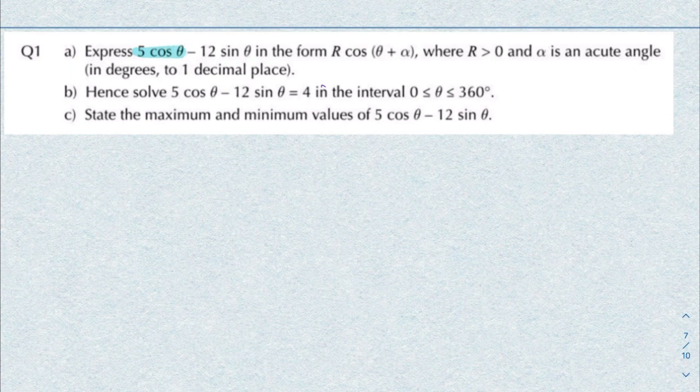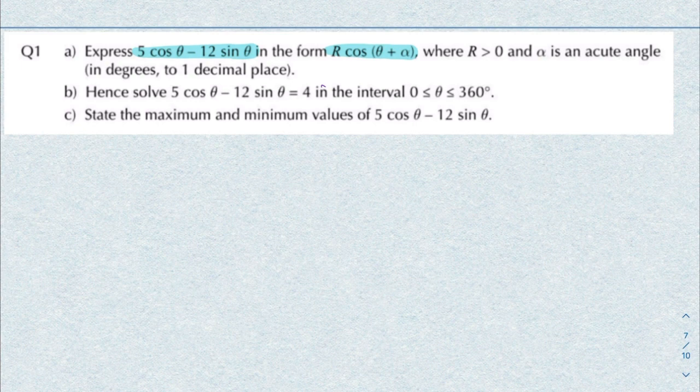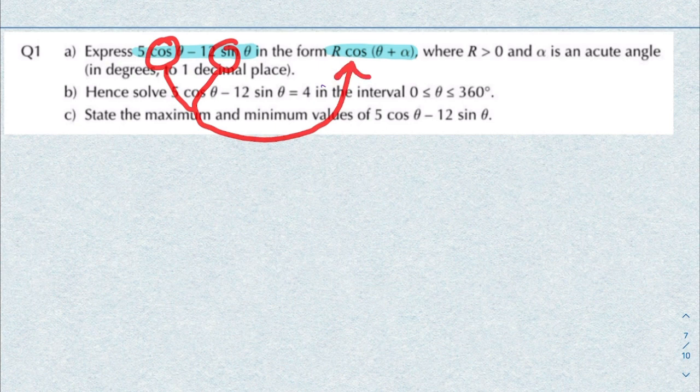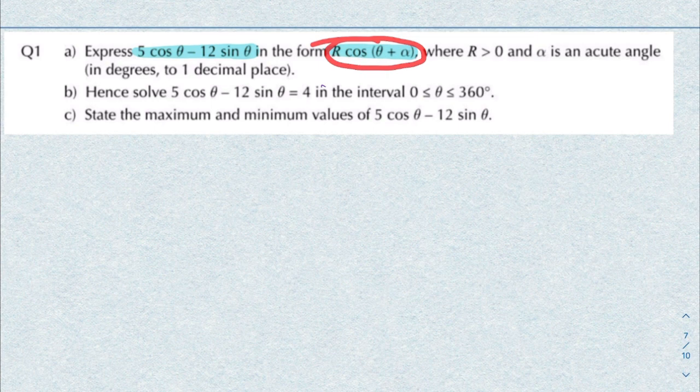Here we're given this expression and we're asked to write it in this form, so we need to combine a cosine and a sine both into a single cosine. We do this by first expanding cosine theta plus alpha.